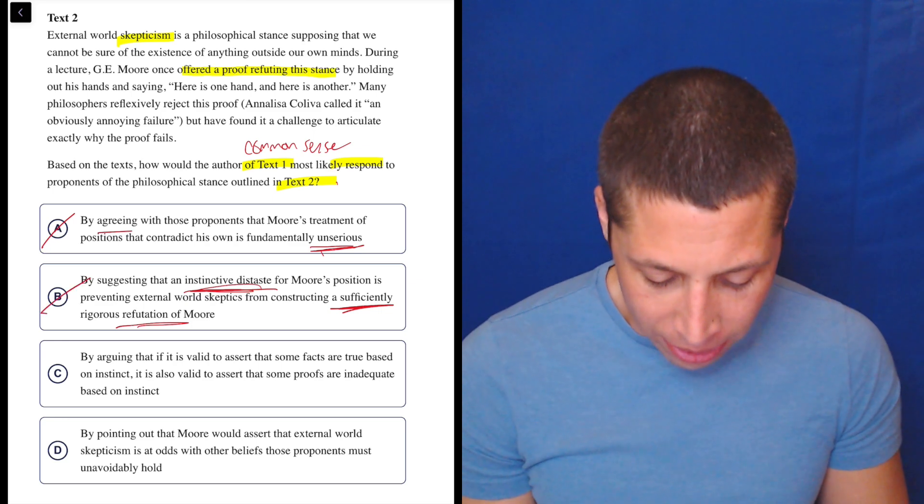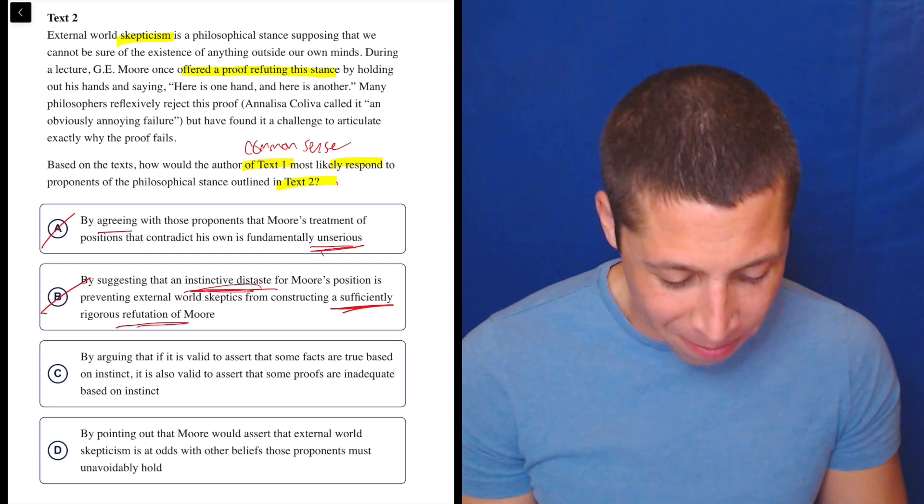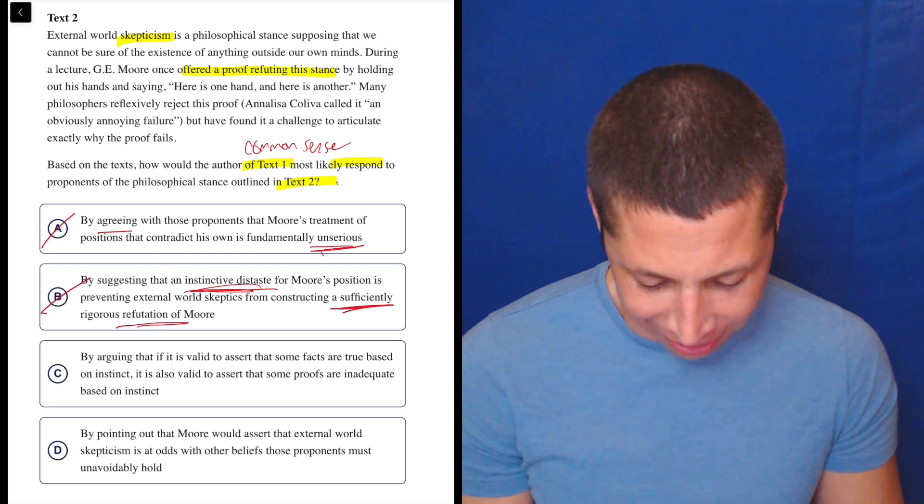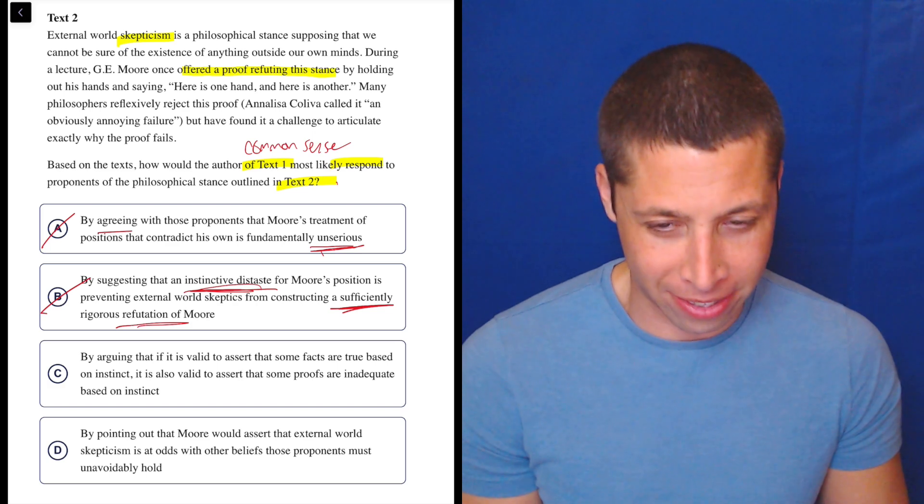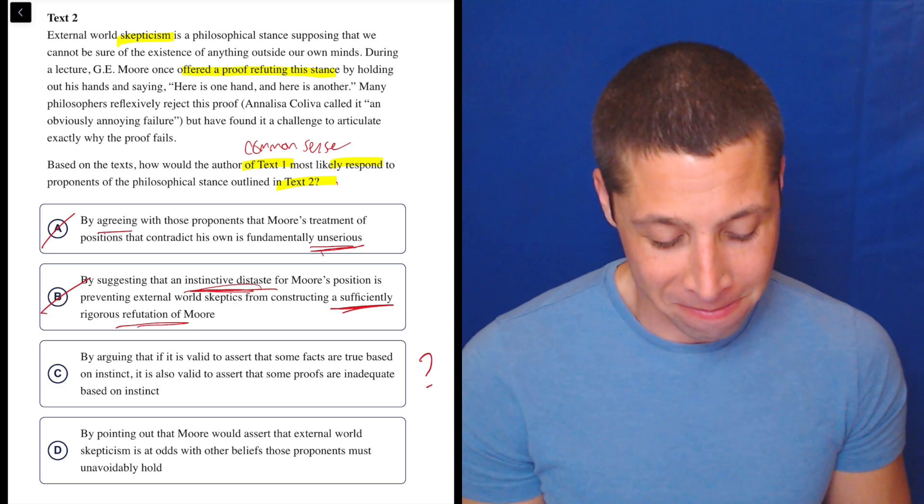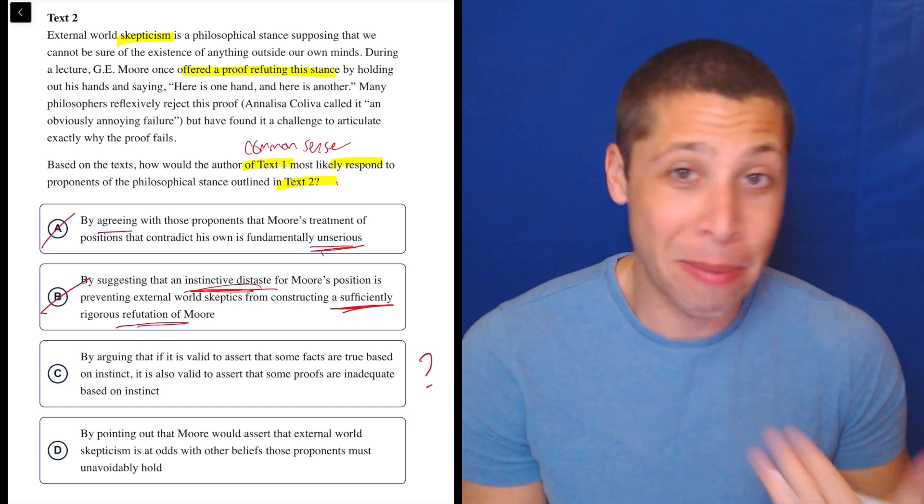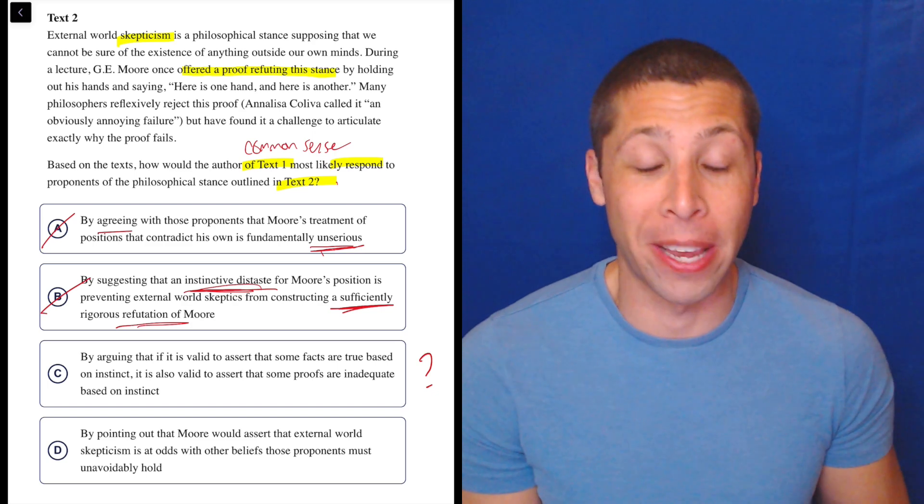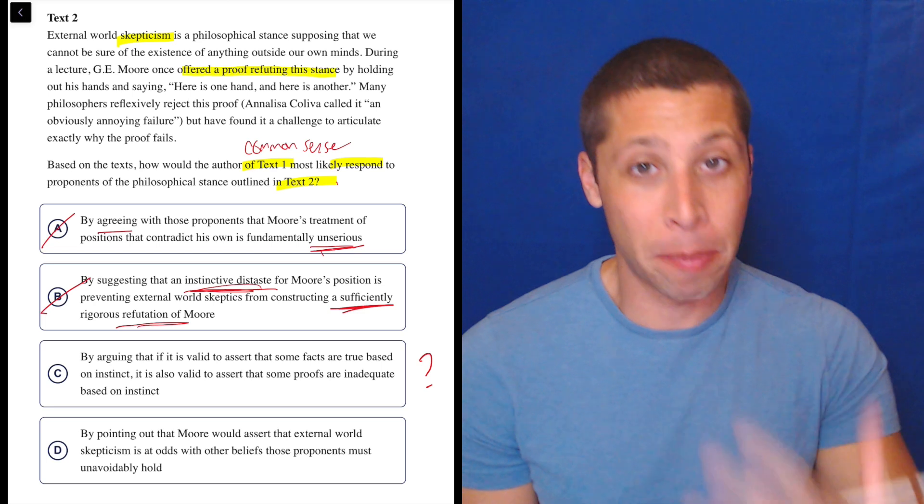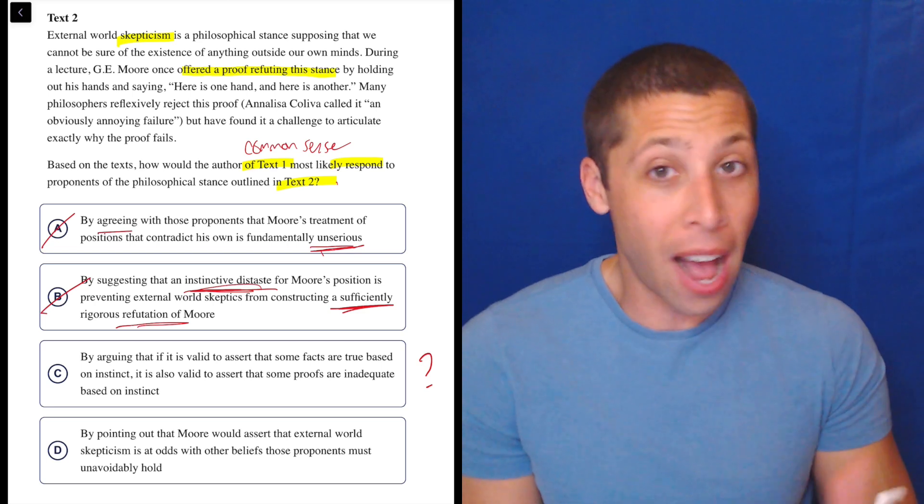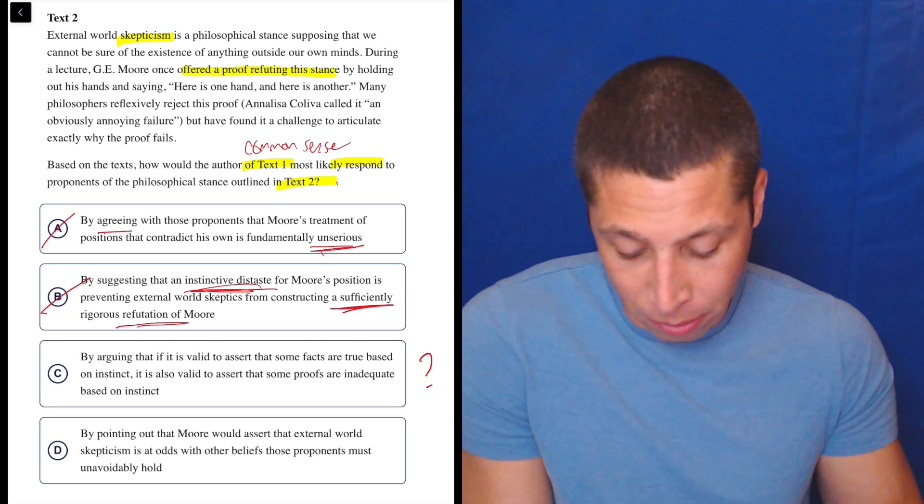C. By arguing that if it is valid to assert that some facts are true based on instinct, it is also valid to assert that some proofs are inadequate based on instinct. I'm a philosophy major, guys, and most of this is nonsense to me. So let that just remind you that you don't need to know the topics in these passages to get these questions right. This is just, I don't know what this means.